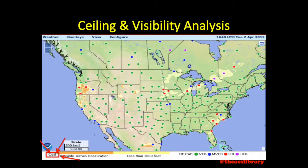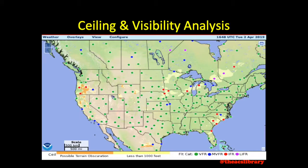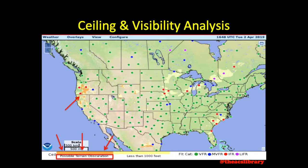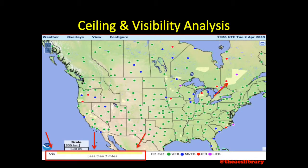When selecting the Ceiling weather depiction option, airport flight category depiction remains unchanged. However, here no shading signifies ceilings above 1,000 feet AGL, while pale yellow depicts ceilings below 1,000 feet AGL, and orange again depicts possible terrain obstructions. The visibility depiction option simply has pale yellow shading for visibility below 3 statute miles and no shading for visibility above that.